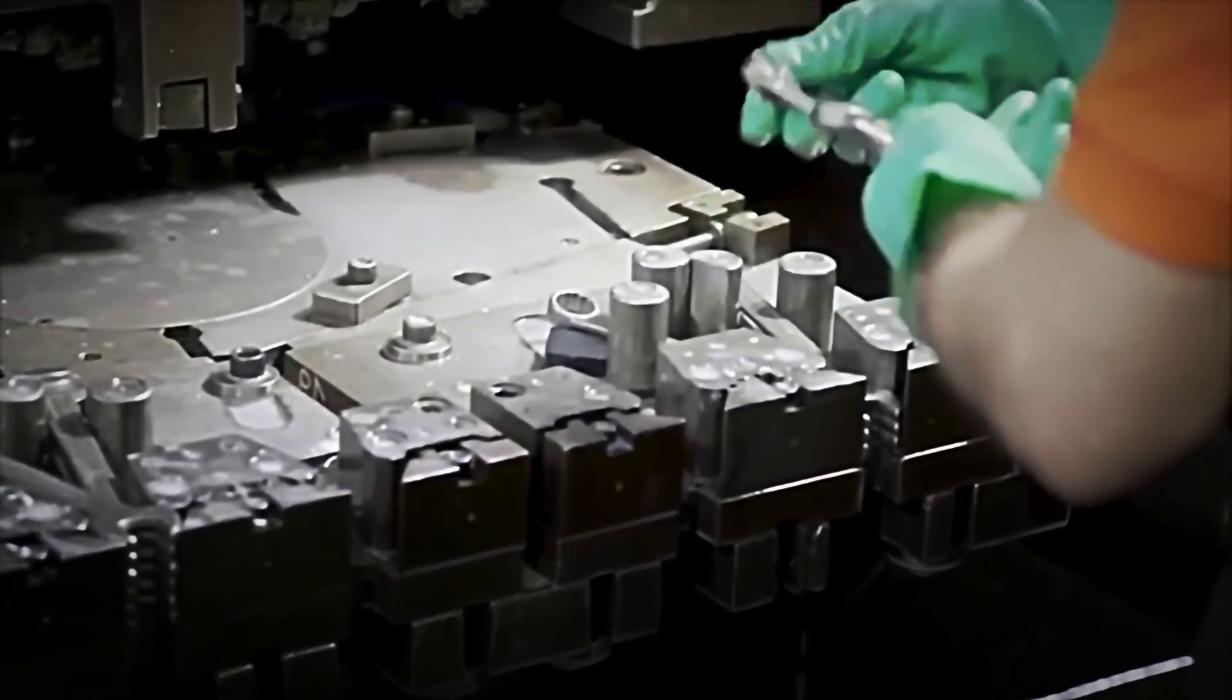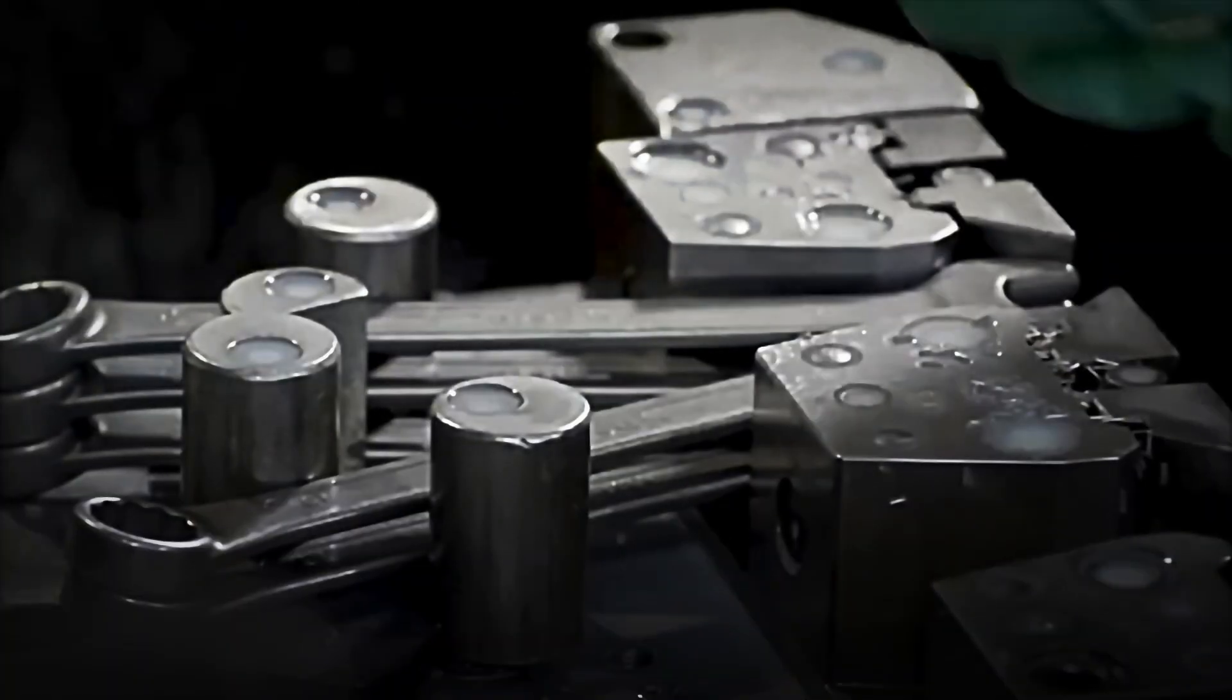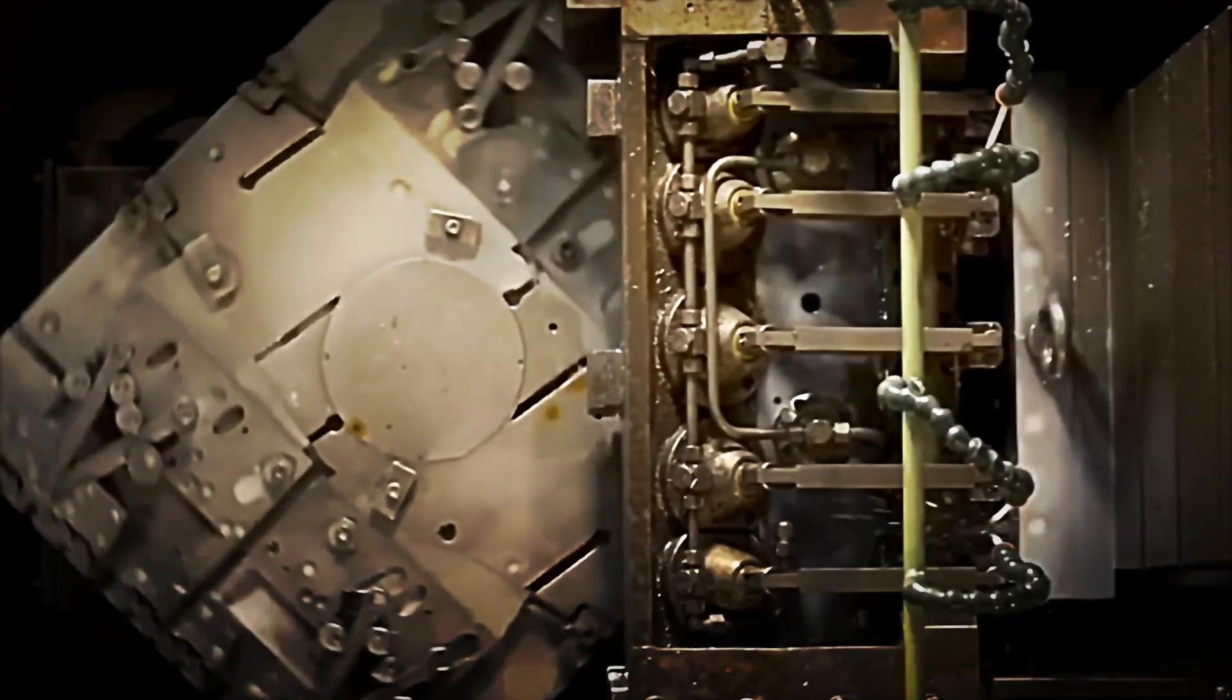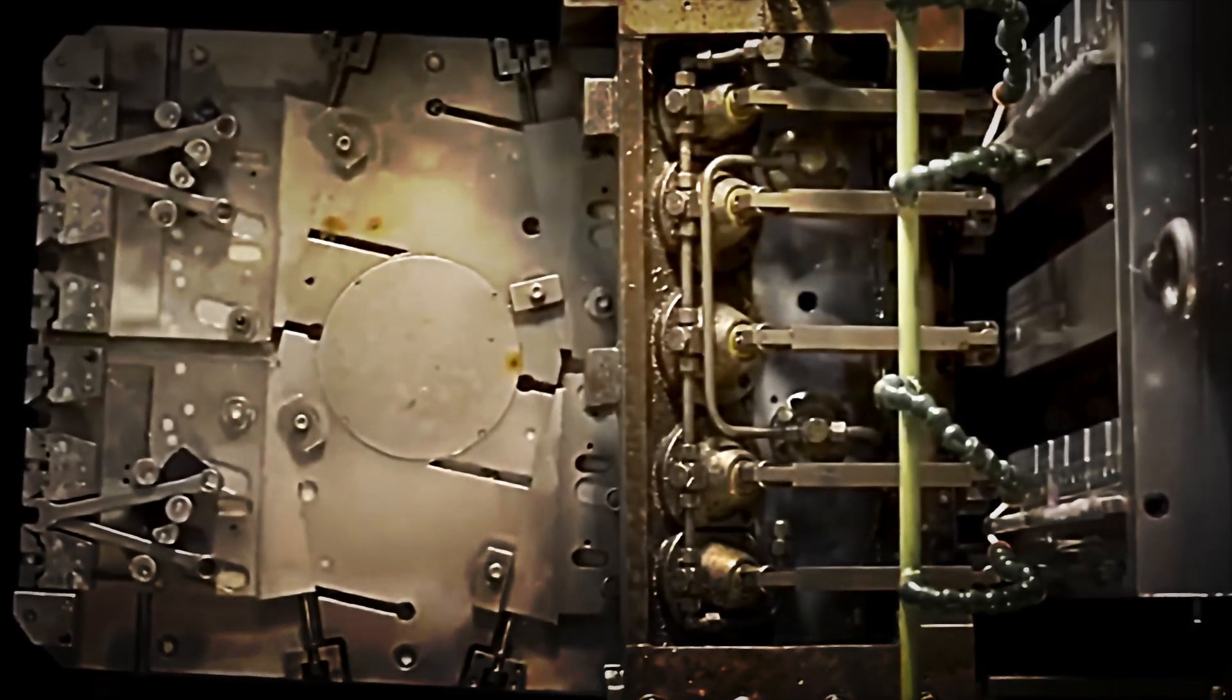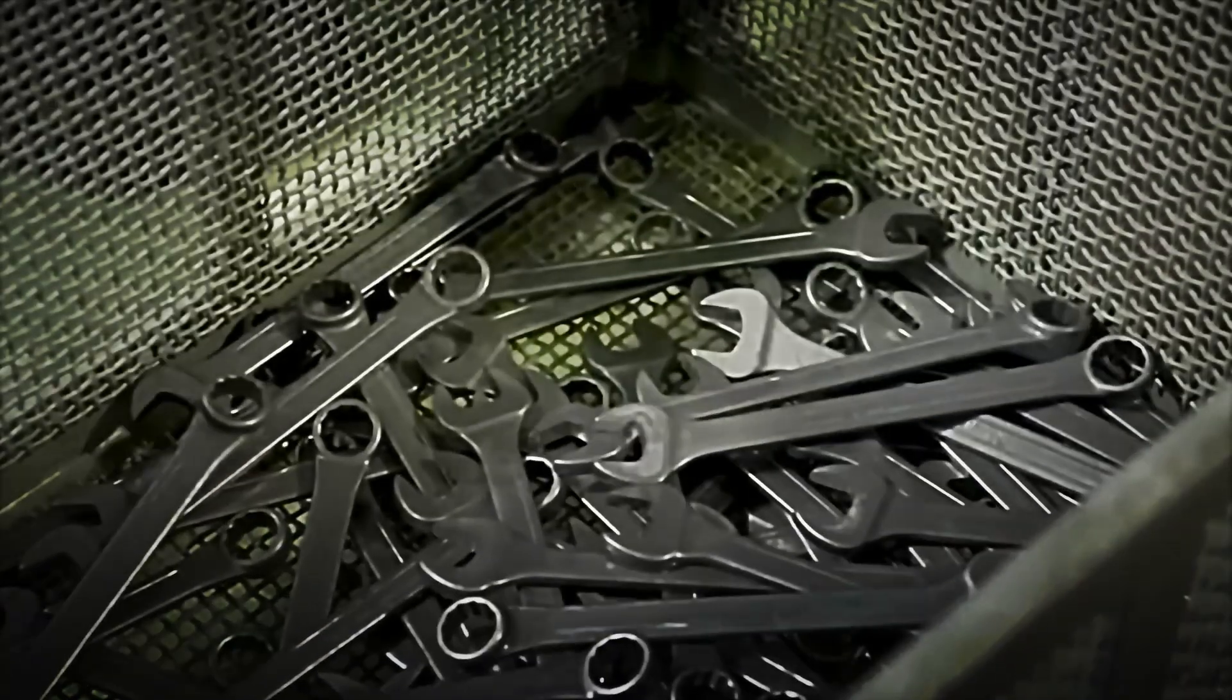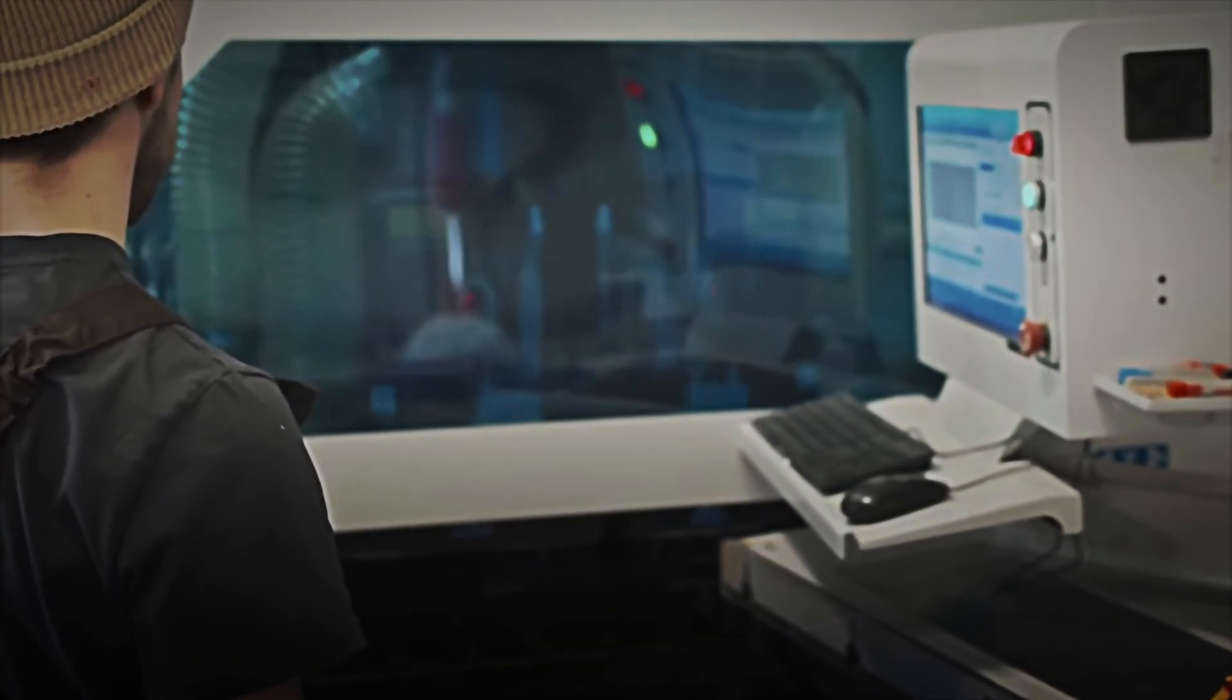Once the precise temperature is reached, the keys immediately undergo hardening, a rapid cooling process using oil or special polymers. This abrupt temperature change creates a crystalline structure known as martensite, which is extremely hard but also brittle if not corrected.